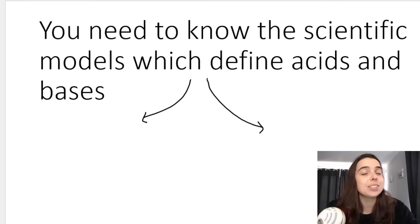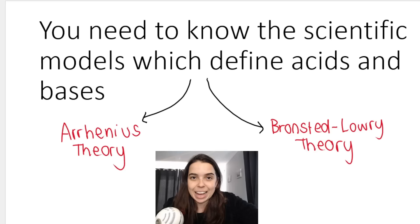You need to know the scientific models which define acids and bases. Our first scientist is Arrhenius, who defined acids and bases in one way. Then two other scientists, Lowry and Bronsted, built on the work of Arrhenius, defining acids and bases in another way. You need to be able to define an acid and a base using both theories.